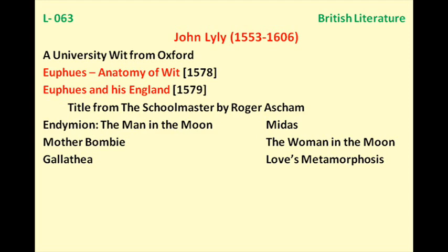The first name we have is John Lily. He was born in the year 1553 and died in 1606. He is a well-known dramatist of the Elizabethan age and is famous for his work Euphues. From this word we have the term 'euphuism.' We shall talk about this work in brief.